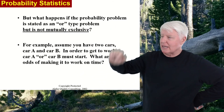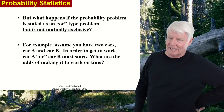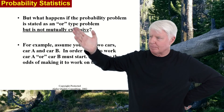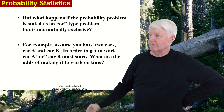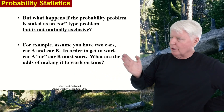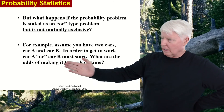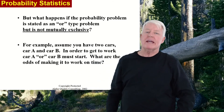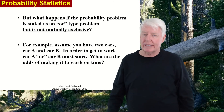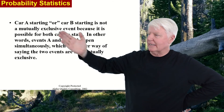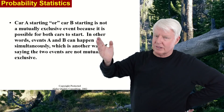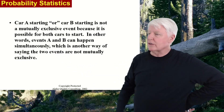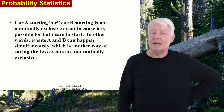But what happens if the probability problem is stated as an OR type problem and is not mutually exclusive? For example, assume you have two cars, car A and car B. In order to get to work, car A or car B must start. What are the odds of making it to work on time? If you go out and try to start them, they could both start. Therefore it is not a mutually exclusive event — car A starting or car B starting is not mutually exclusive because it is possible for both cars to start, meaning the two events can happen simultaneously.